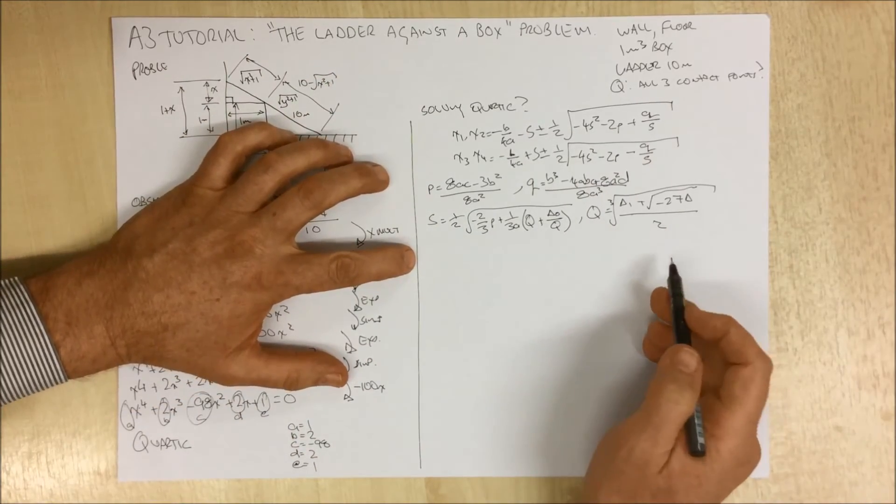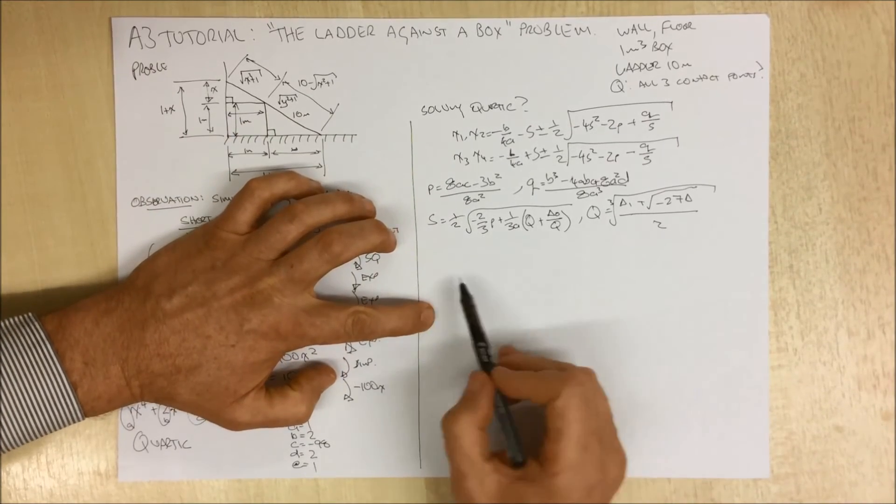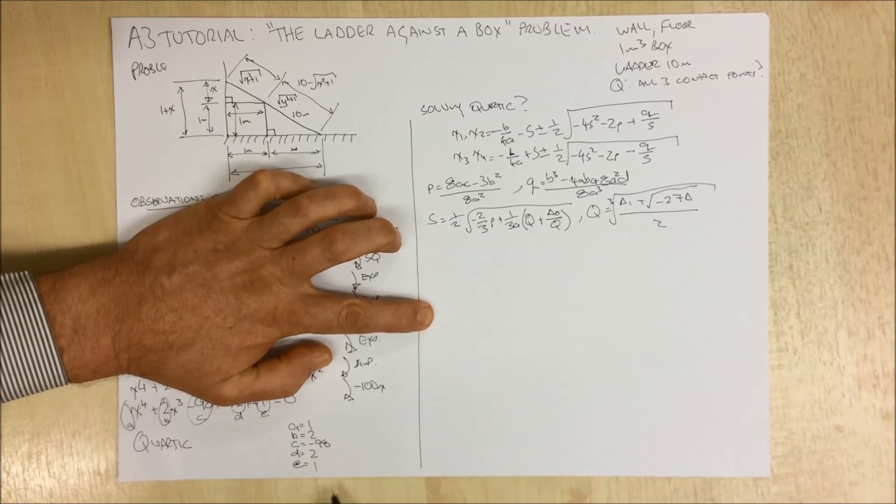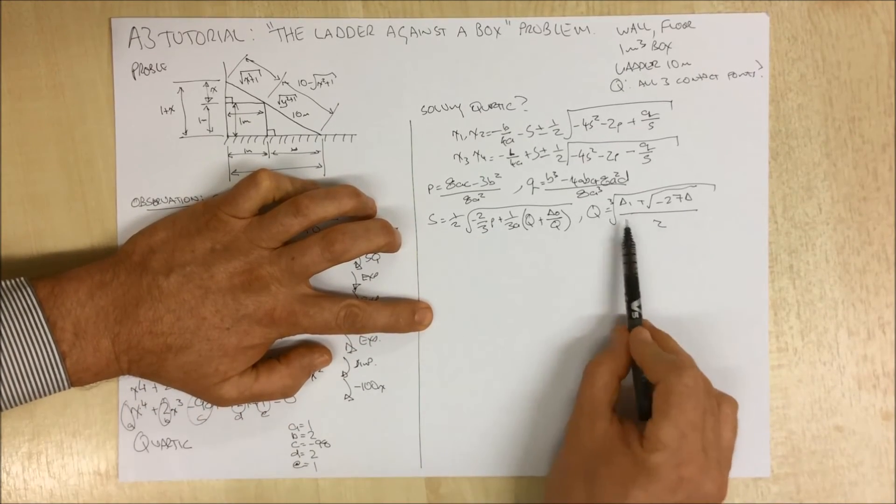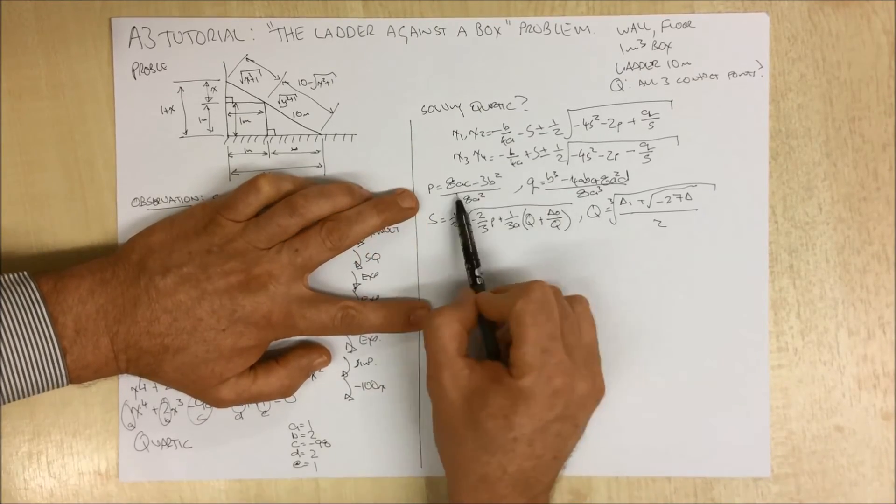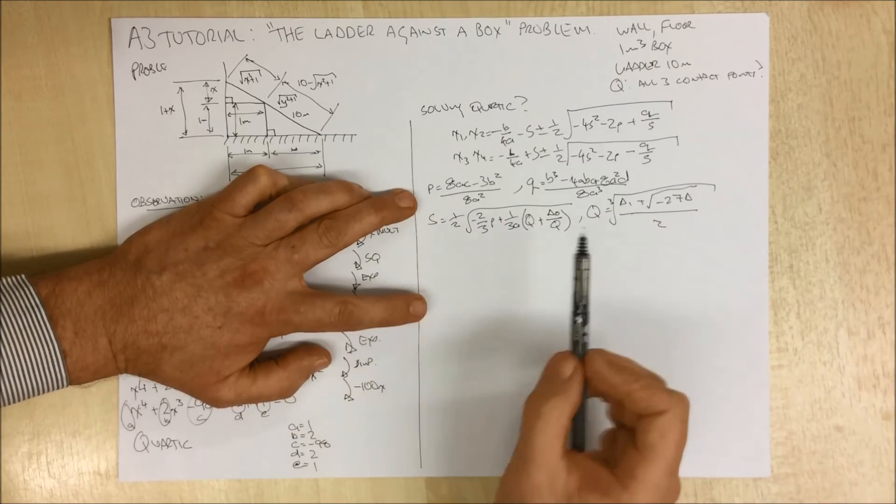And to find q is the cube root of delta 1 plus the square root of minus 27 of delta all over 2. And so it goes on. And finally, after several more iterations of these steps, you can actually get the values that you can put a, b, c, d, and e into. That will give you these delta 1s and deltas, which in turn will give you qs, which will give you ss, which you can get p's and q's, which you can then stick into these equations. And then you can get your roots.